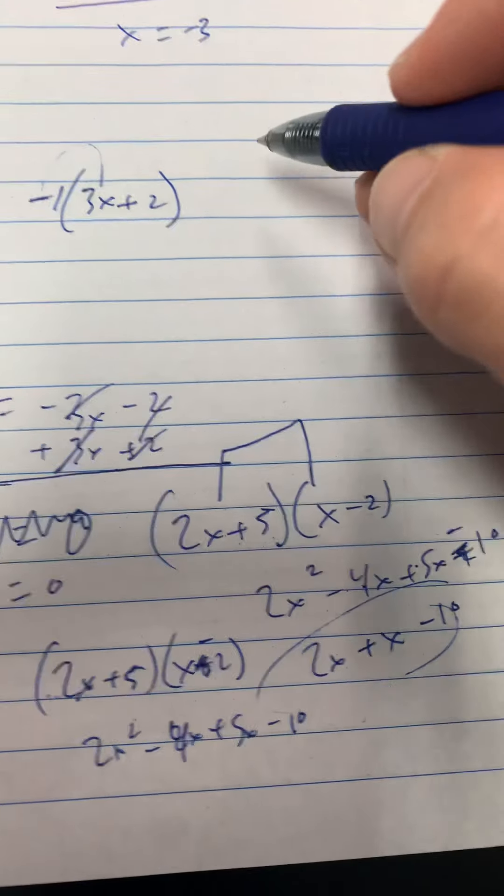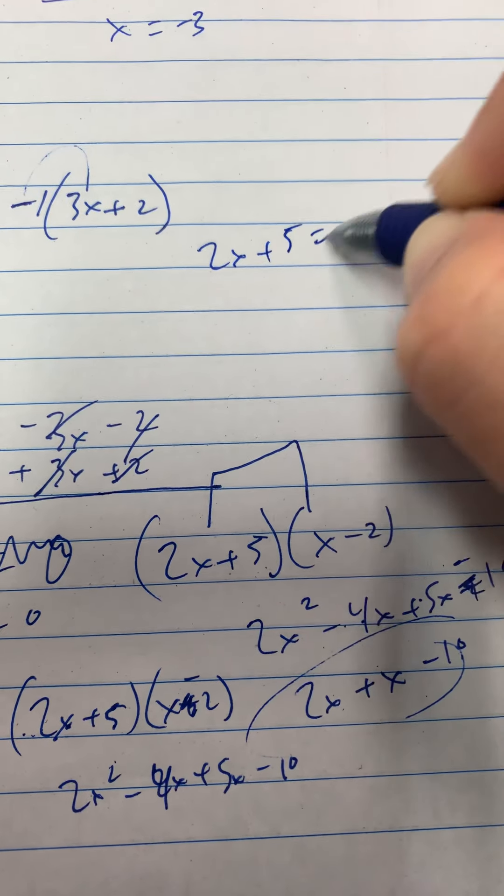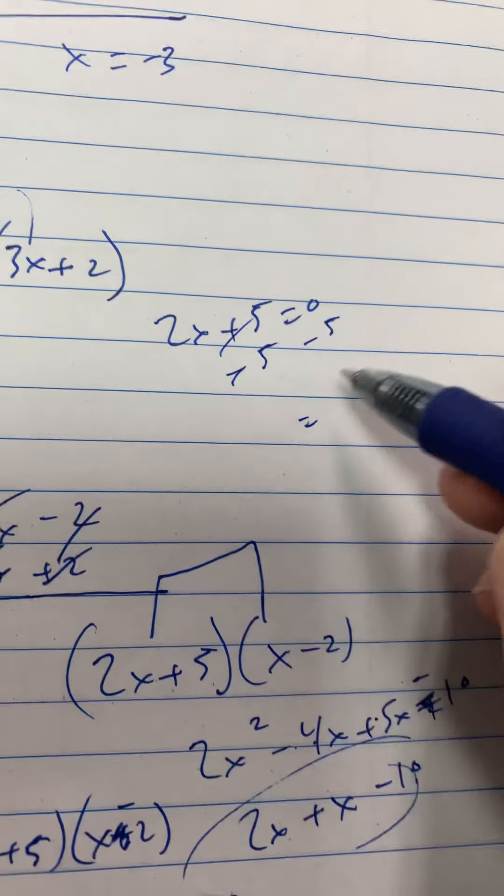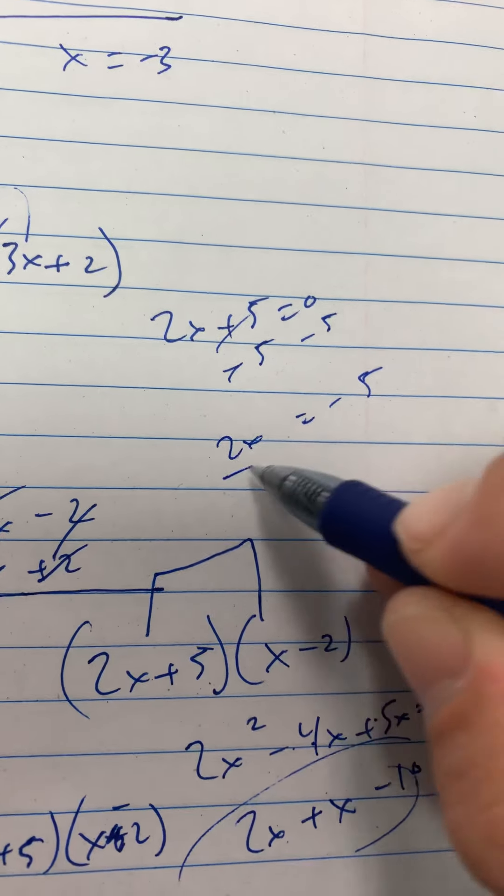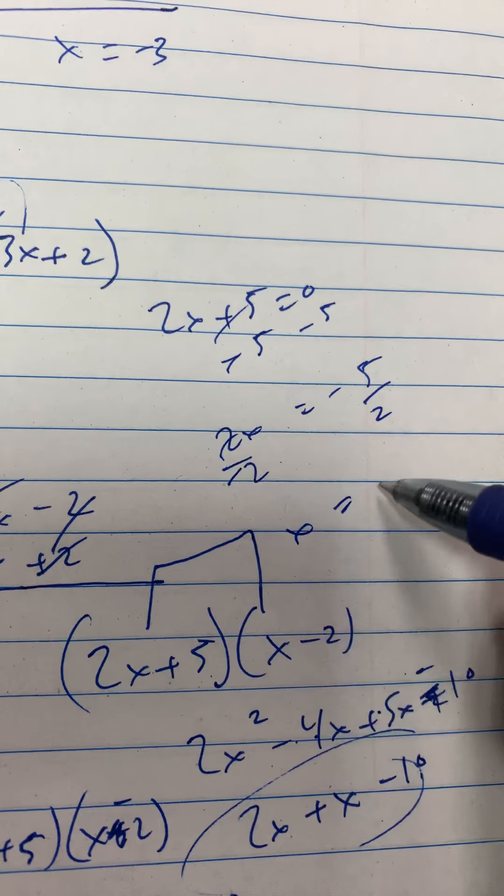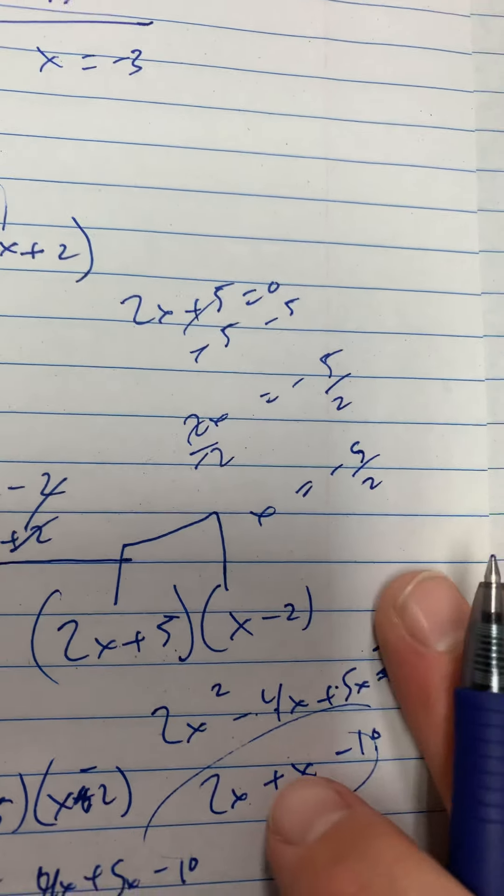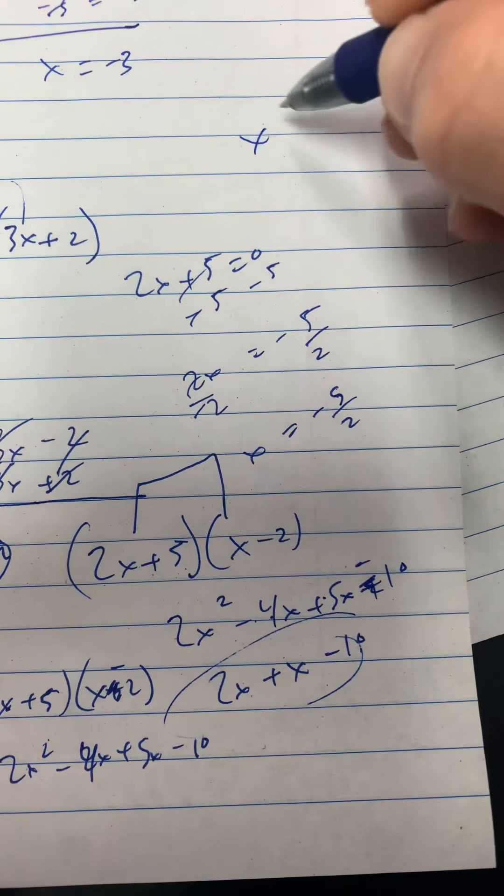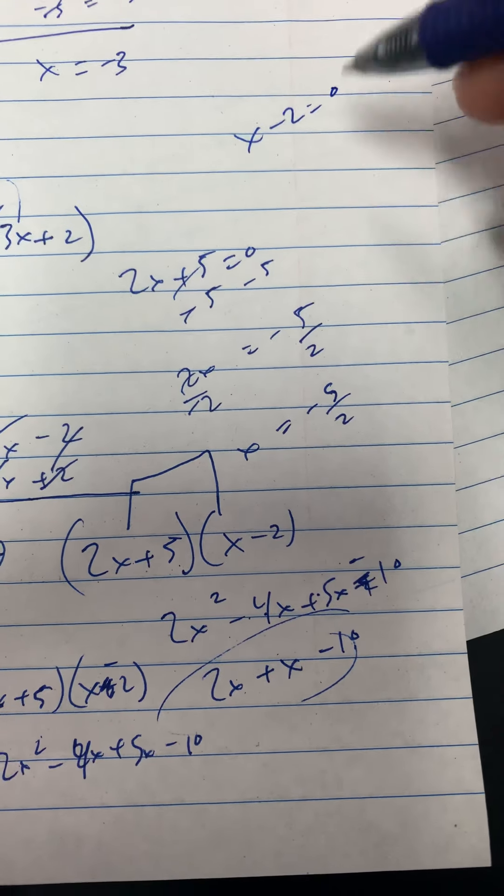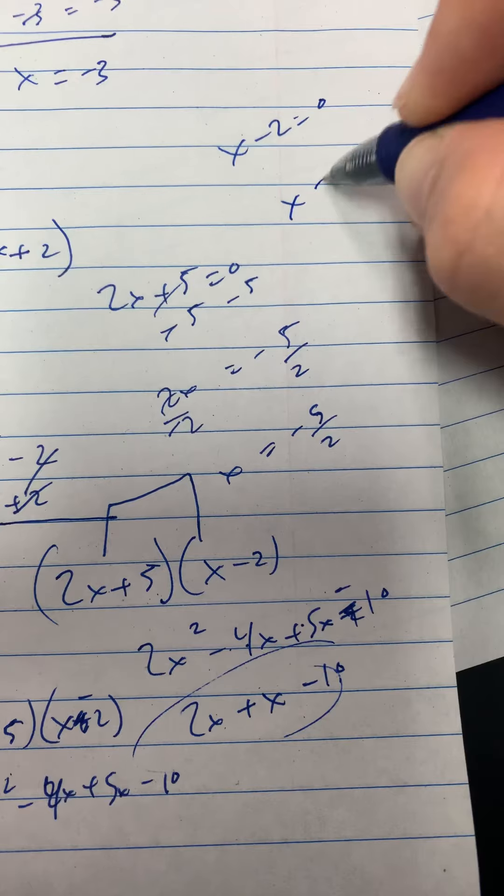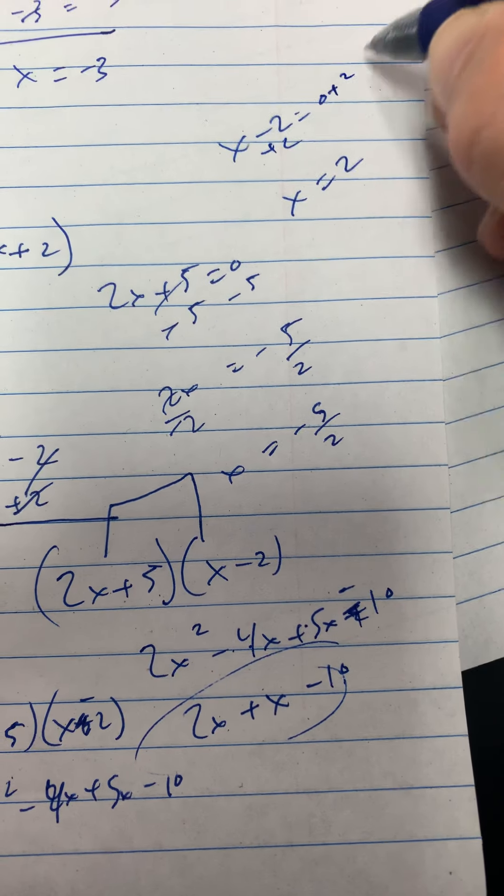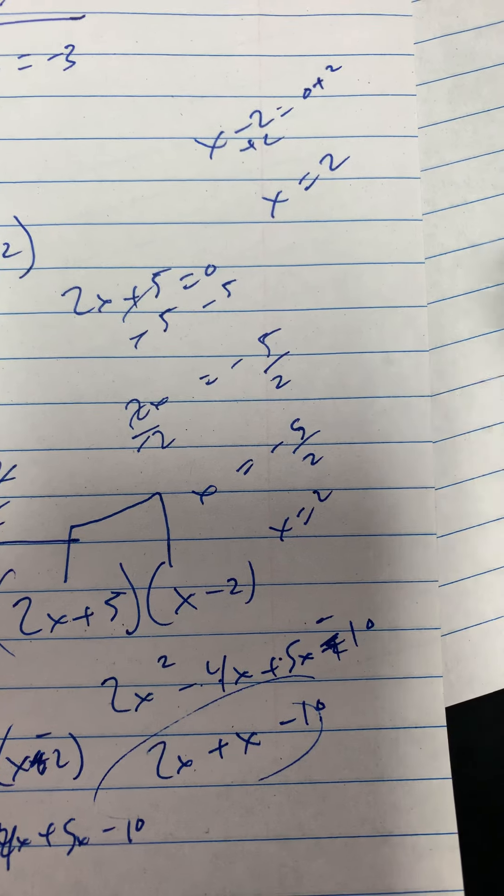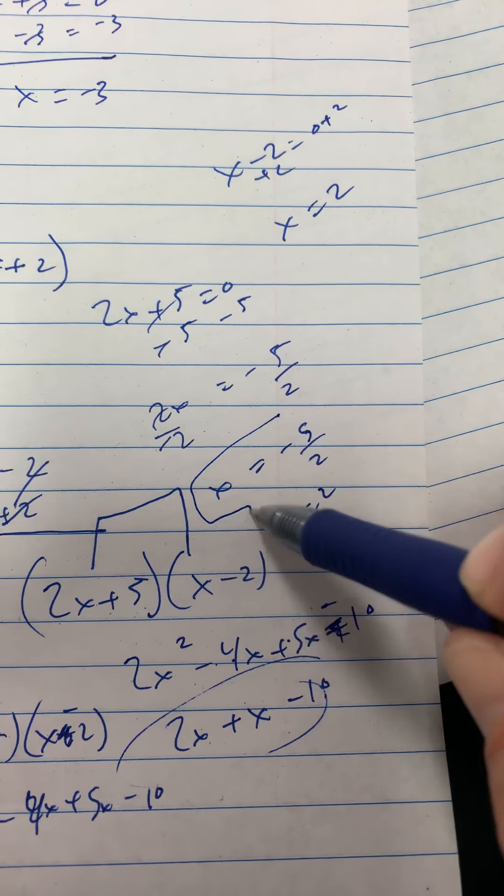So we're going to set these equal to 0. So 2x plus 5 equals 0. And we're going to solve for x. So minus 5, minus 5, gives us negative 5, 2x, divided by 2, divided by 2. x equals negative 5 over 2. That's one of our values there. And then let's take x minus 2 equals 0. That's our second factoring there. And we're going to have x equals 2. We're going to bring 2 over there like that. So we should have x equals 2. And there is our answers.